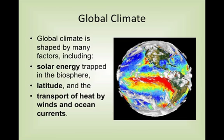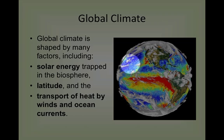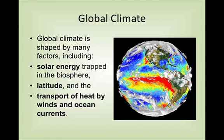Transport of heat by winds and ocean is very important. This picture has the ocean colored — this is very warm ocean water, and here is very cool ocean water. That transport of energy by ocean water and wind accounts for a lot of the weather that we get, and it definitely accounts for climate.